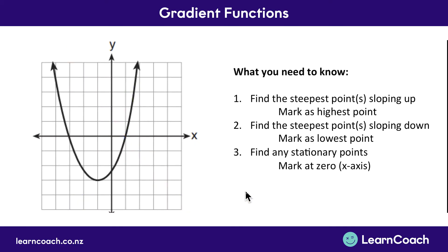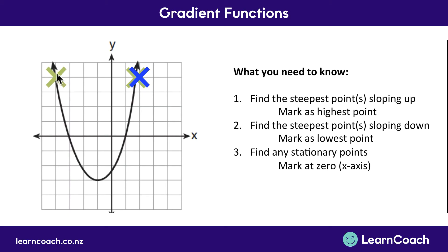Let's try another one. Going through our first step: find the steepest point sloping upward — that's one over on the right — and on our new set of axes we mark that as the highest point upwards. Then for the second step, find the steepest point sloping down and mark that as the lowest point on your new set of axes, because that's the biggest negative gradient.